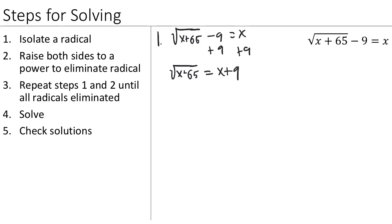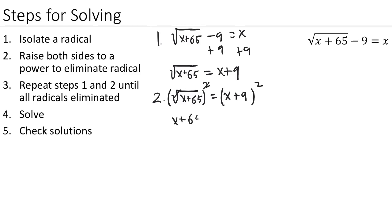Now that the radical is isolated, step 2 is to raise both sides to a power to eliminate the radical. We have a square root, so we raise both sides to the second power. On the left-hand side the square root and the square cancel off, leaving x plus 65. On the right-hand side you have to be careful — this means x plus 9 times x plus 9, which you FOIL to get x squared plus 18x plus 81.